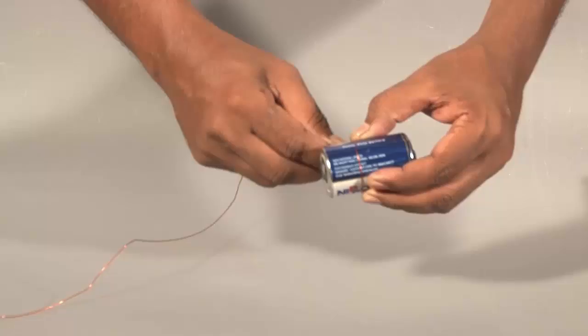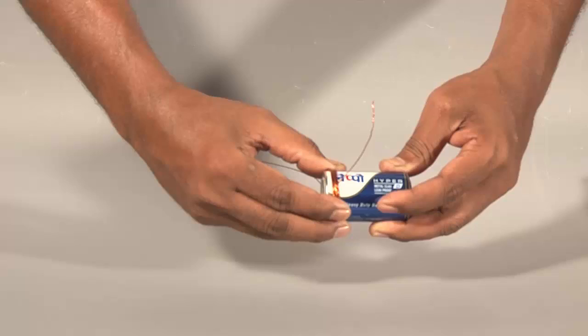Take a 1.5 meter of insulated copper wire and wind it around the battery. Take about 10 turns and then remove the coil like a spring.